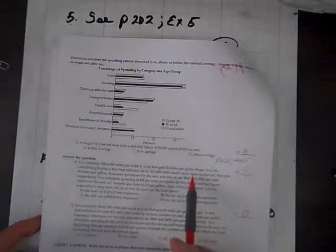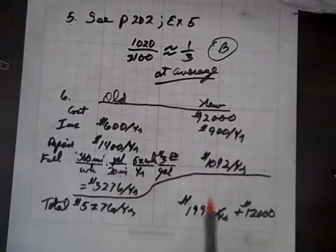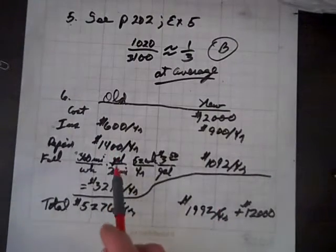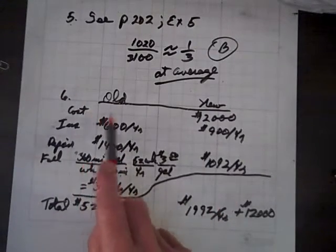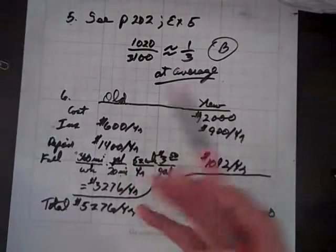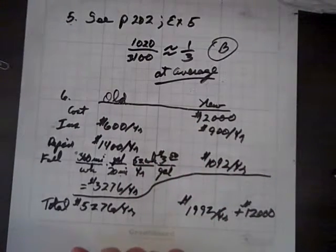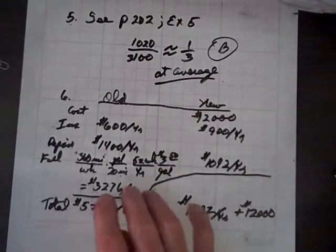Now, number 6, you currently drive 360 miles a week in a car that gets 20 miles per gallon of gas. So I've collected this data, and you can read through this, but let's compare, let's use the chart to go through this thing. So the cost of a new car, and we want to find out which is cheaper to operate over five years, the new car or the old car.